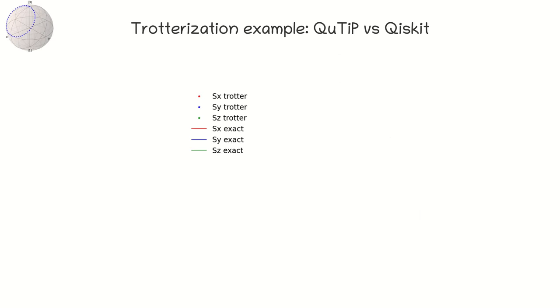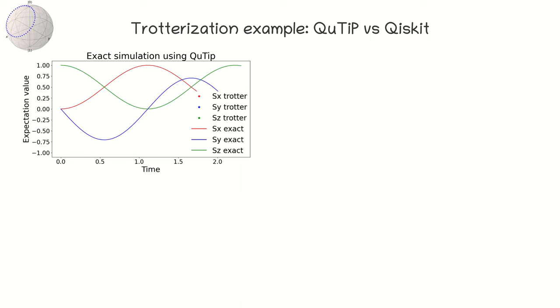Now, let's compare the efficiency of trotterization for different numbers of trotter steps. Let us first perform an exact simulation with QuTiP for some arbitrary time period. In the figure, you see the expectation values of x, y, and z components of the Bloch vector. In the case of the spin-half system, these will be the projections of the spin operator on the x, y, and z axis of the Bloch sphere.